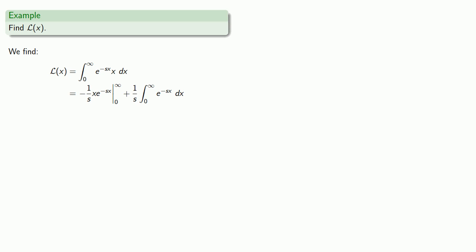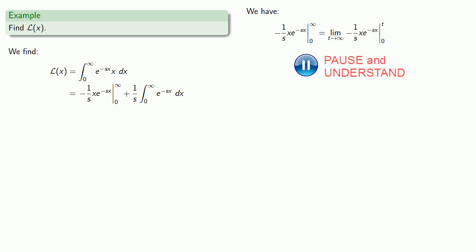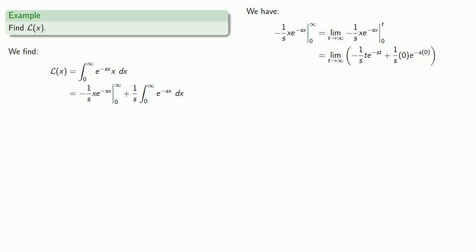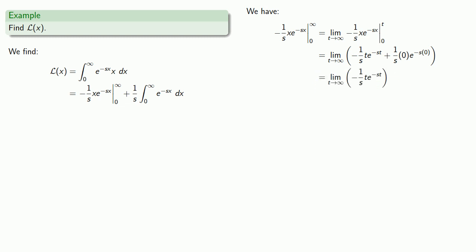Since this is an improper integral, we should dot all of our t's and cross all of our i's. We can't really let the upper bound be infinity — we have to rewrite it as a limit as t goes to infinity. We evaluate at the upper bound and at the lower bound, and do a little algebra. Now we have a problem: if we're going to let t go to infinity, the value of this expression is going to depend on s and on t.